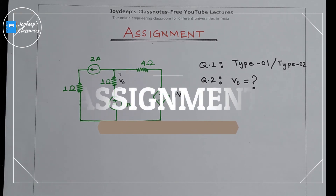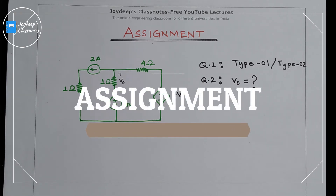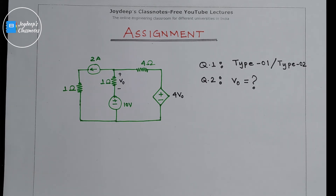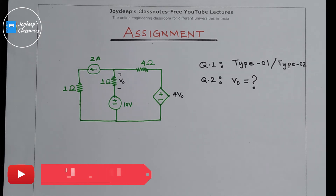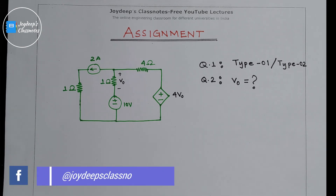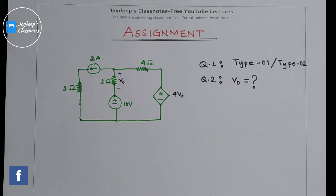This question is for your assignment. You need to find out two things: question one — which type of question is it, type one where the dependent source depends on some voltage, or type two where it depends on some current value? Question two — find out the value of V naught. Take a pen and paper, note down this question and solve it on your own. After 24 hours, I will write down the correct answer in the comments.